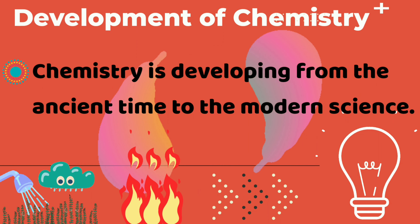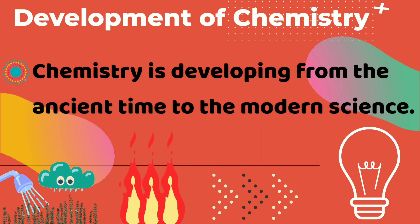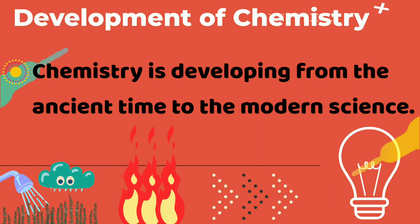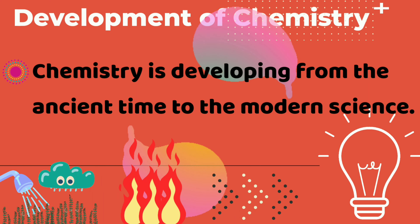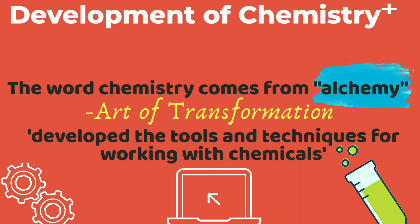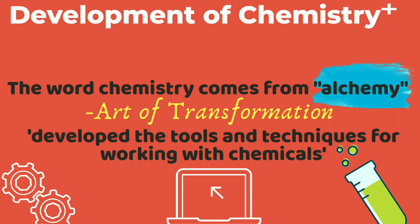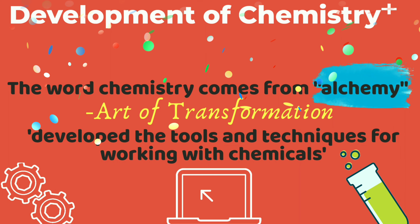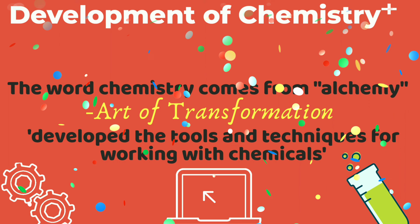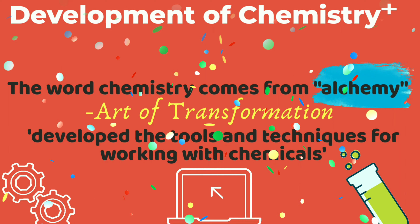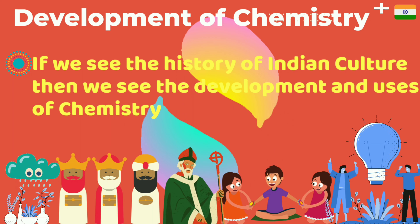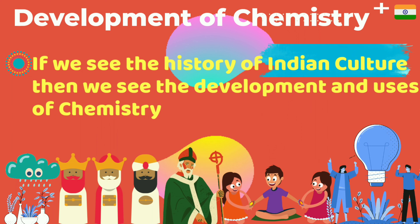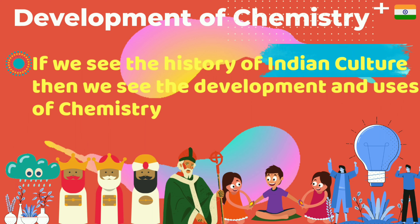Chemistry has been developing from ancient times to modern science. It comes from the word 'alchemy,' which means the art of transformation — it developed tools and techniques for working with chemicals. Chemistry has the magical power to change things, and it is a very interesting part of science. If we see the history of our Indian culture, we can see the development and uses of chemistry from ancient times.